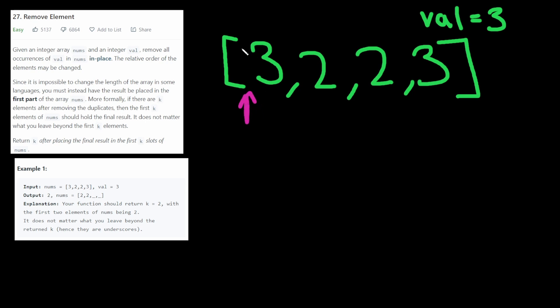So the insert index is here, zero, and we go to the first element three. Three matches the value, so we don't do anything. Then we go to the next element two. Two does not match the value, therefore we insert it at the beginning of the array.